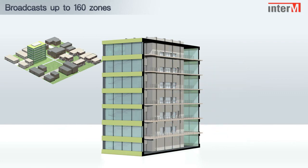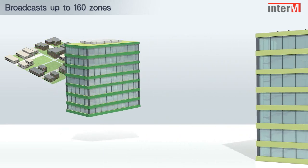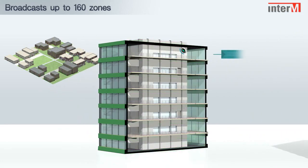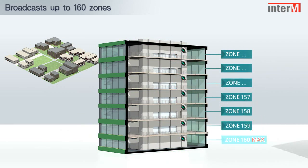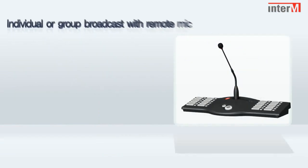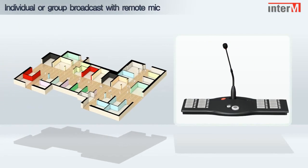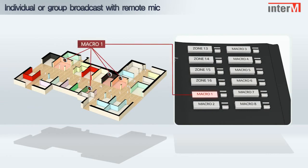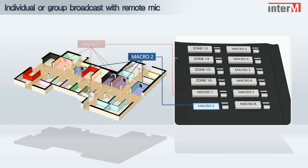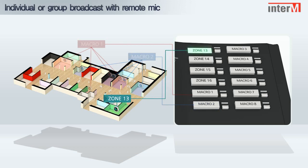Using additional units, the 6000 system can broadcast up to a maximum of 160 zones. The 6000 system is able to address individual or group zones via the remote mic, using the flexible macro facility.